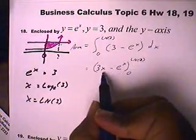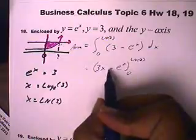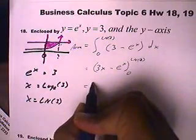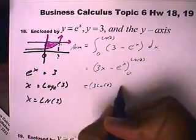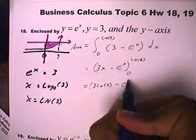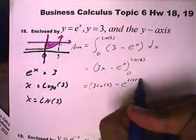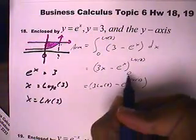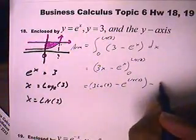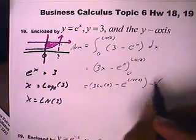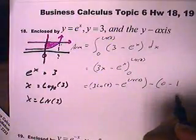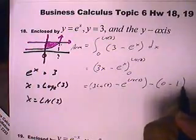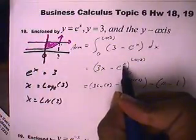So, everywhere we see an x, we're going to put in the natural log of 3 first. So, this will be 3 natural log of 3 minus e to the natural log of 3. Then we'll put 0s in both places for x. So, 0 here will give us 0, and 0 here will give us 1, so that's a negative 1, because e to the 0 power is 1.